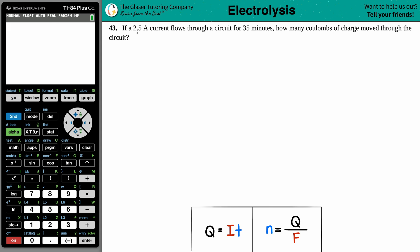Number 43. If a 2.5 amp current flows through a circuit for 35 minutes, how many coulombs of charge moved through the circuit?